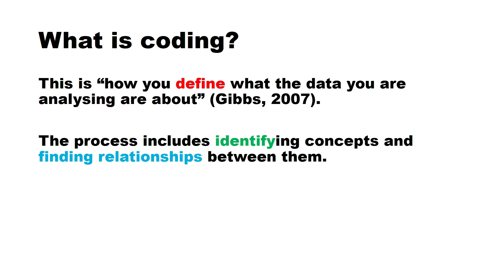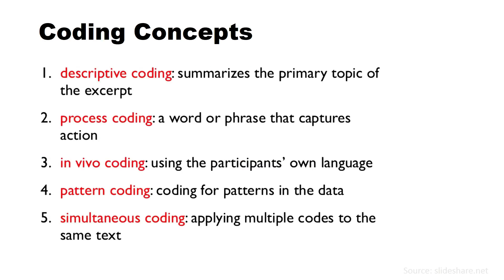The process of coding includes identifying concepts and finding relationships between them as we go along with the data analysis process. Let me show you the different coding concepts. There are different ways of how you can code: we have descriptive coding, process coding, in vivo coding, pattern coding, and simultaneous coding. It would be time consuming to explain all of them, so I will just show you descriptive coding and in vivo coding, to give you a clear picture of how to code.